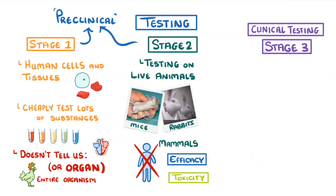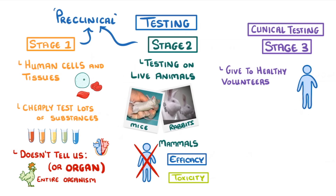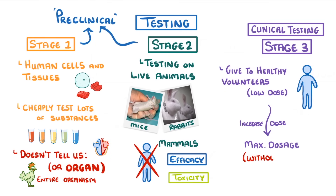The final stage is clinical testing, where we finally give the drug to humans. The first step is to give the drugs to healthy volunteers, starting with a really low dose, just to check it doesn't cause any problems. Then we slowly increase the dose, with the doctors keeping a close eye on the health of the volunteers, checking for any side effects. The aim here is to find the maximum dosage that we can give before we start to get side effects.